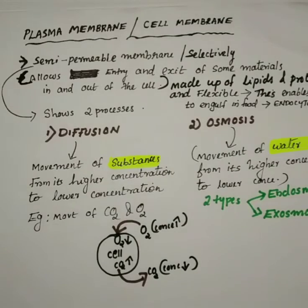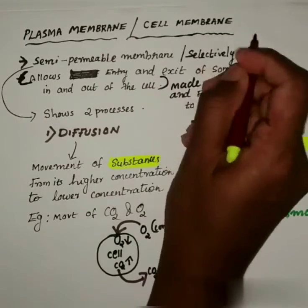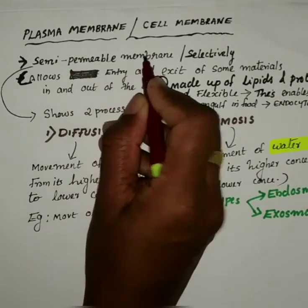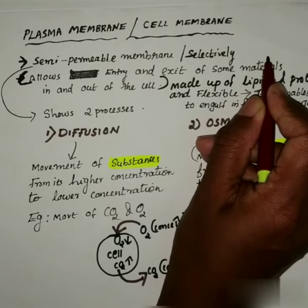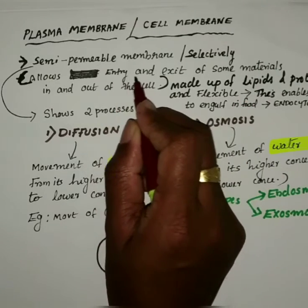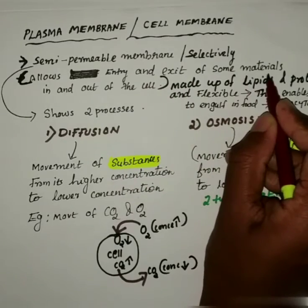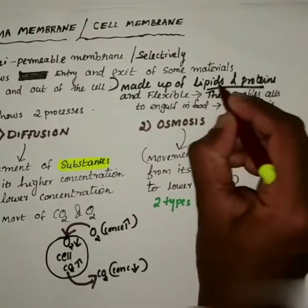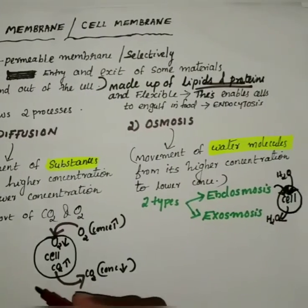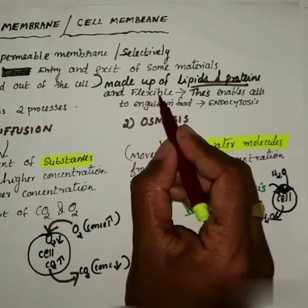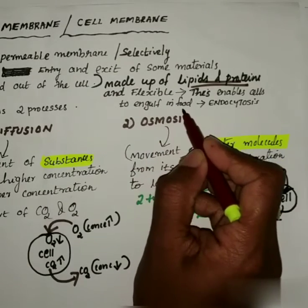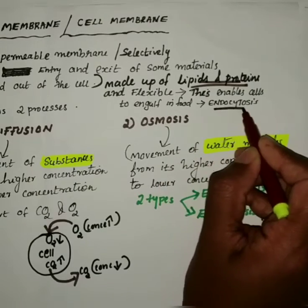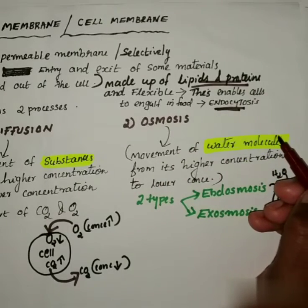The outermost covering of an animal cell is the plasma membrane or cell membrane, which is also known as a semi-permeable or selectively permeable membrane. It allows only the entry and exit of some materials in and out of the cell — it does not allow all substances inside. Only some materials can get inside or out of the cell. The cell membrane is made up of lipids and proteins, which makes it very flexible. This cell membrane enables the cell to engulf food, a process called endocytosis. Amoeba acquires food through this process.